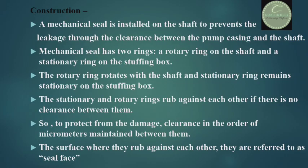Now about the construction of the mechanical seal — how is it made? A mechanical seal is installed on the shaft inside the stuffing box to prevent leakage through the clearance between the pump casing and the shaft. It has two rings: a rotary ring on the shaft and a stationary ring on the stuffing box.